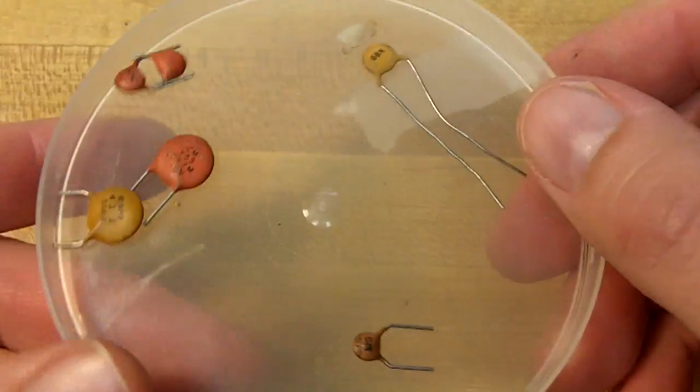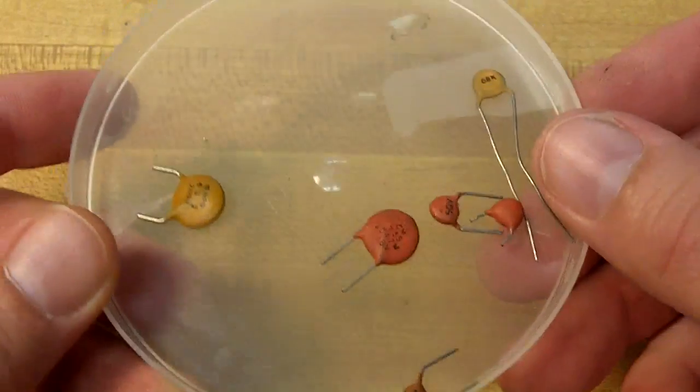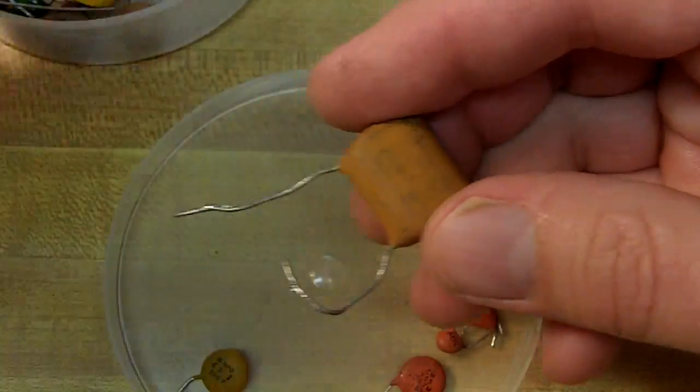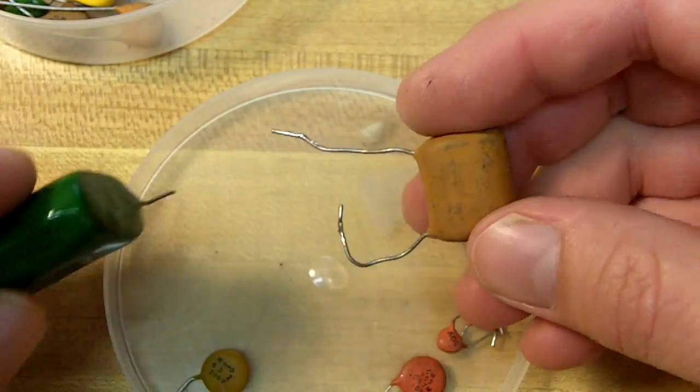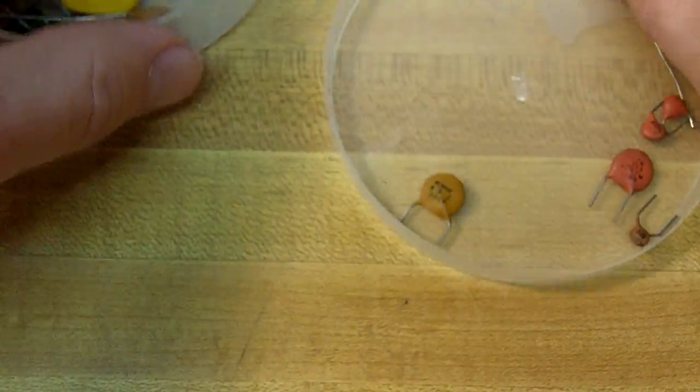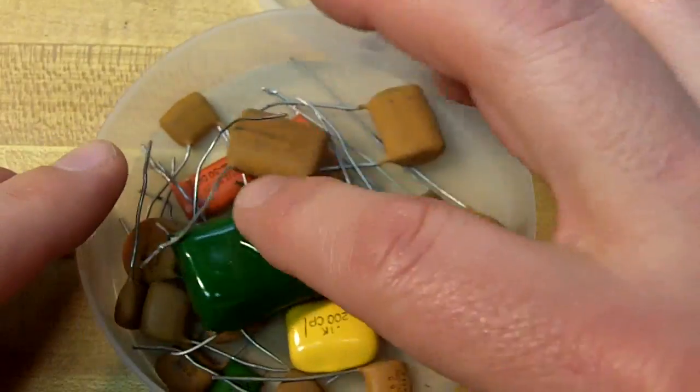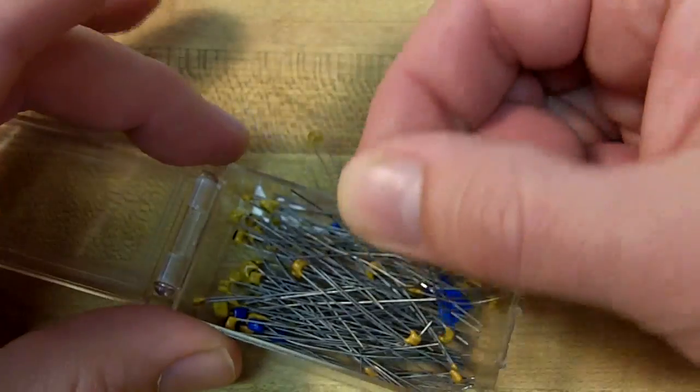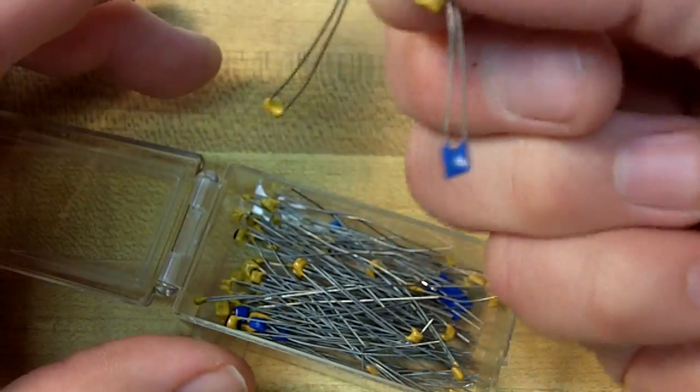Capacitors also come in these packages, little discs. You've probably seen them in electronic circuits. They also come in forms like this, different shapes and sizes. A few in my collection there. They also come in very small sizes.